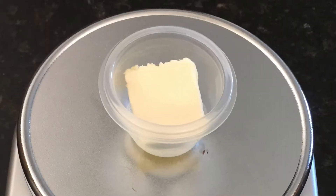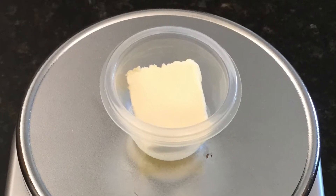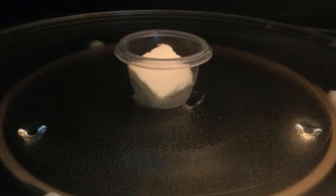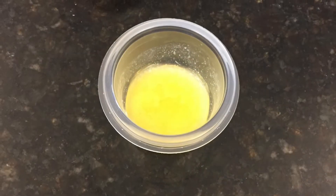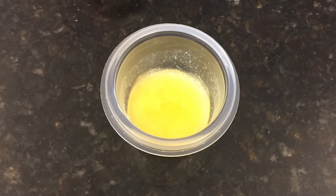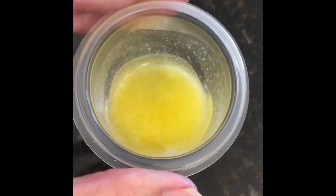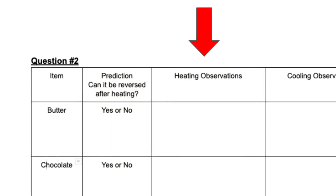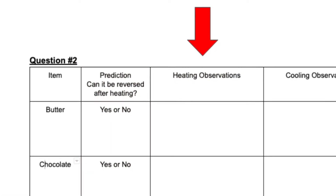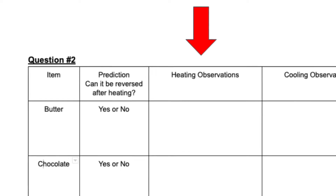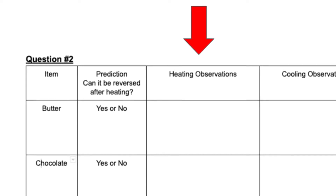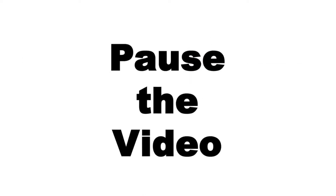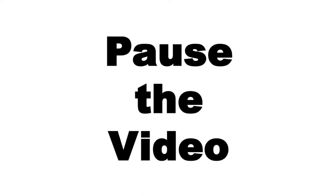Our first substance is butter, which you can see here in the image. I put it in the microwave, and here's what it looked like when it came out after heating it. Look at your worksheet and under the column that says heating observations, write the observations that you made about the butter after it was heated. Pause the video, and when you're ready, start it again.